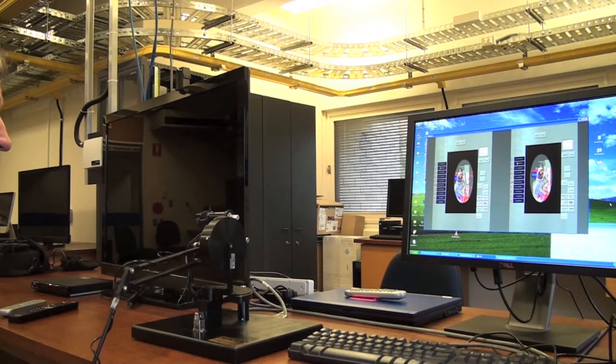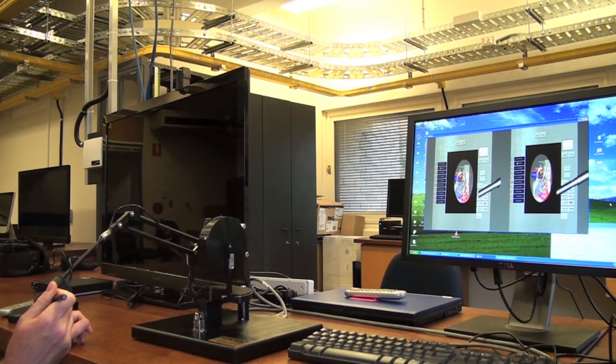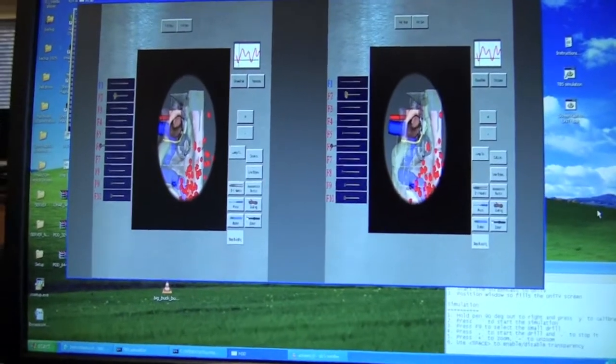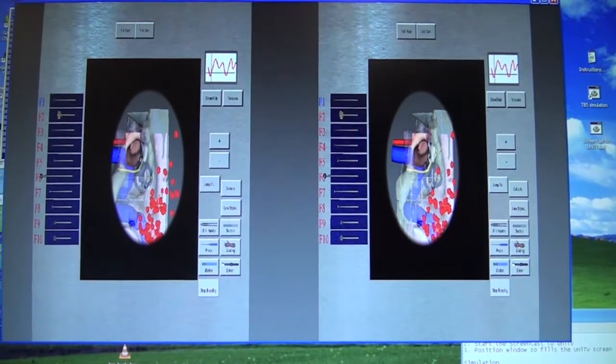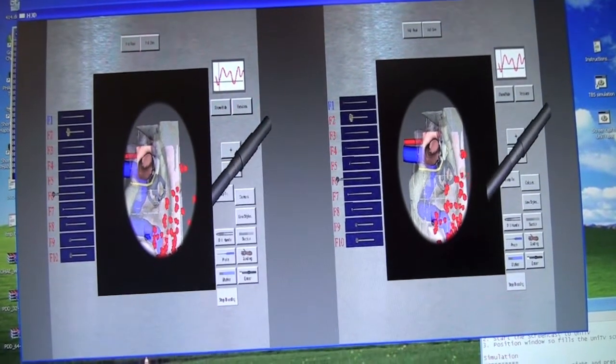This so-called haptics device provides feedback as if drilling into real flesh and bone. The simulator outputs a side-by-side frame which can be recognised and displayed by any domestic 3D television set.